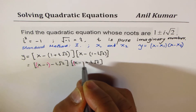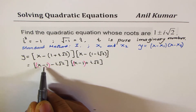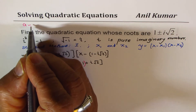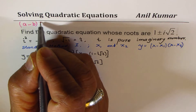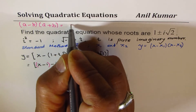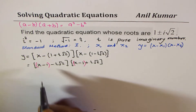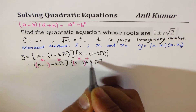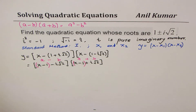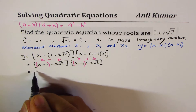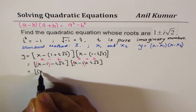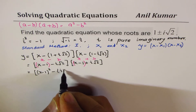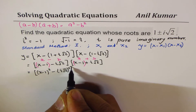Now we can see that (x − 1) is repeated, so this becomes a difference of squares: (a − b)(a + b) = a² − b². Here a = (x − 1) and b = i√2. So we write this as (x − 1)² − (i√2)².